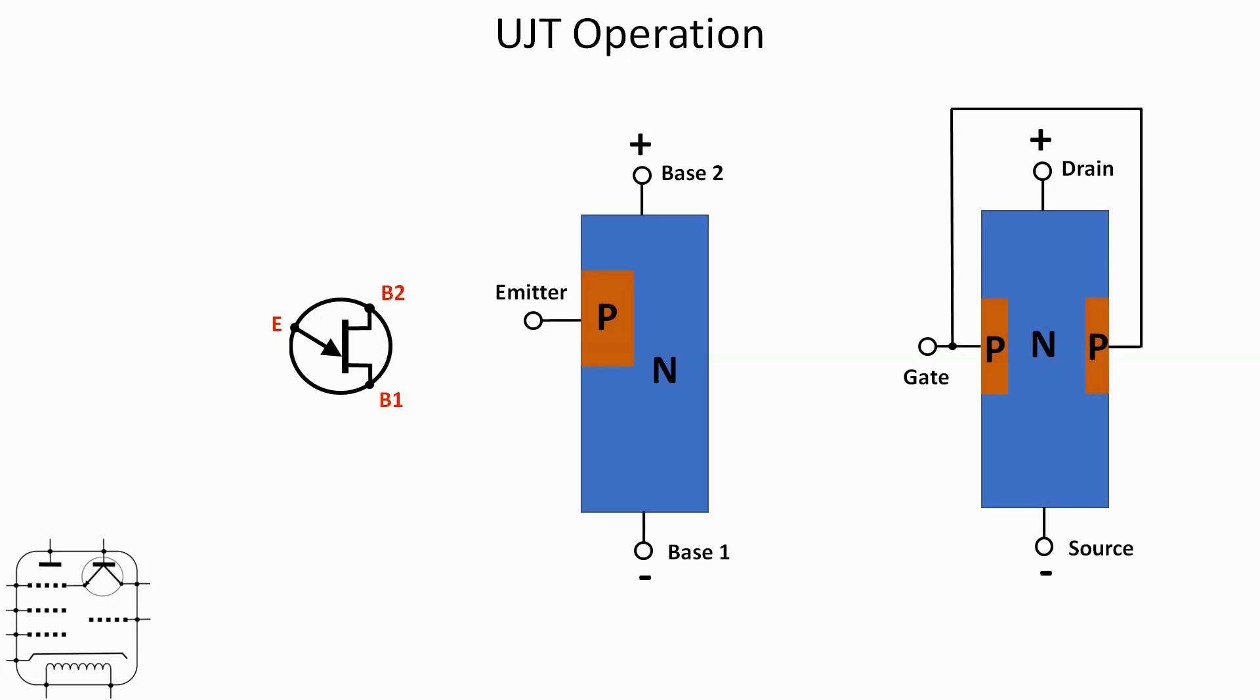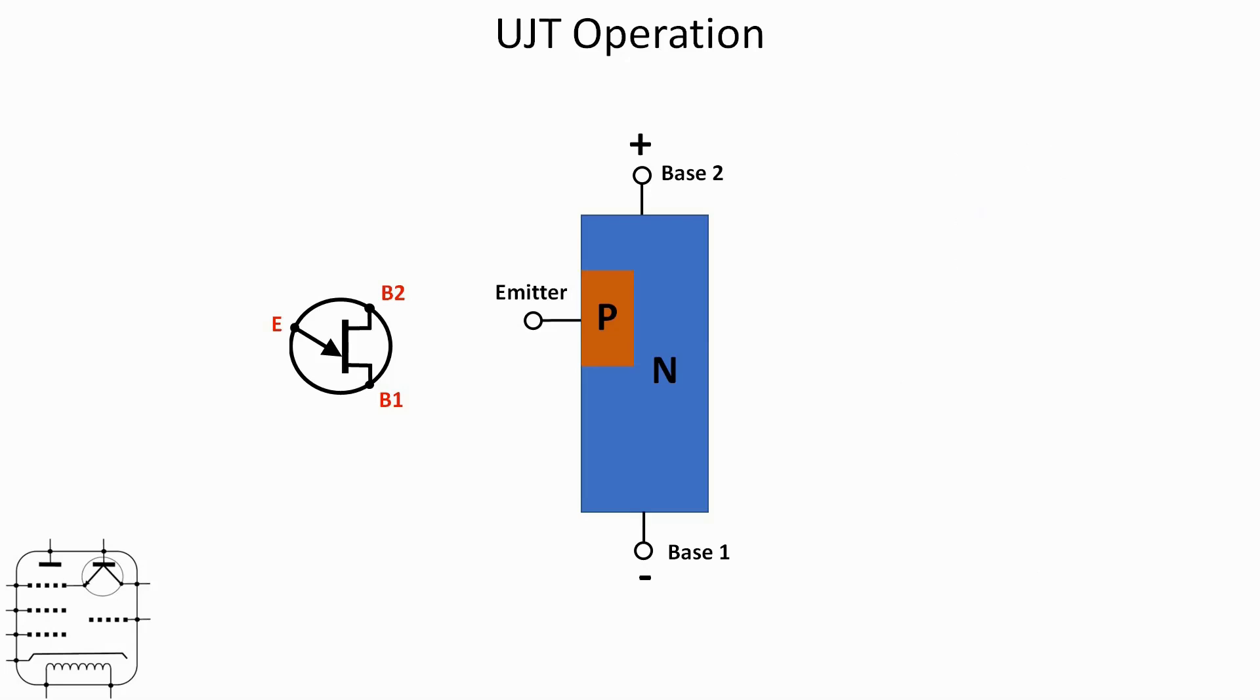It's possibly tempting at this point to draw a similarity between the unijunction transistor and an n-channel JFET. While they might look similar, operation is very different. The FET of course being a voltage control device with very small gate current, whereas the emitter current on a UJT can be considerably higher.